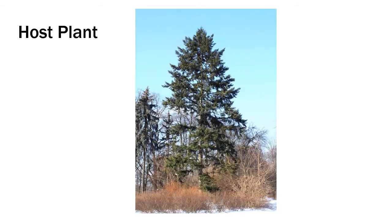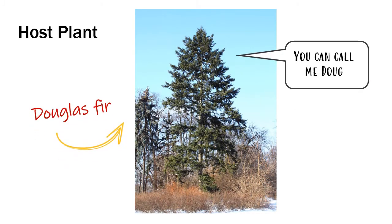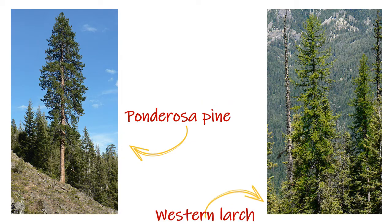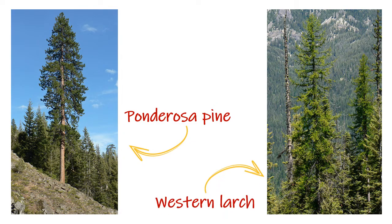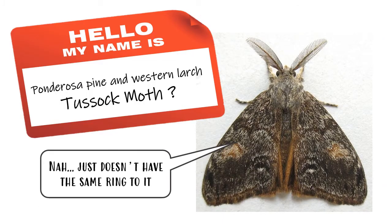The primary host plant of the Douglas fir tussock moth is the Douglas fir. Sometimes they will use other host trees, such as ponderosa pine or western larch, but that means they might have to change their name to avoid an identity crisis.